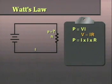This gives P equals I times I times R, or P equals I squared times R, read as power equals current squared times resistance.